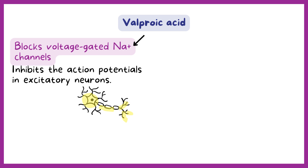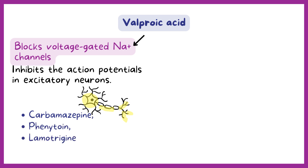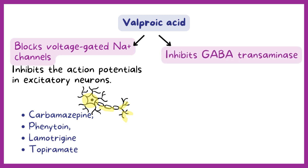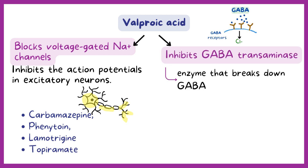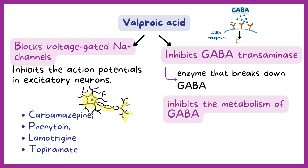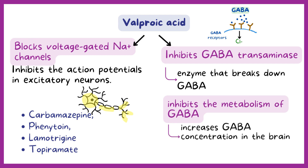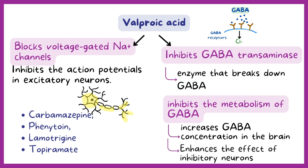Other drugs which block voltage-gated sodium channels include carbamazepine, phenytoin, lamotrigine, and topiramate. Valproic acid also inhibits GABA transaminase, which is an enzyme that breaks down GABA in the inhibitory neurons. So valproic acid inhibits the metabolism of GABA, increases GABA concentration in the brain, and enhances the effect of inhibitory neurons.